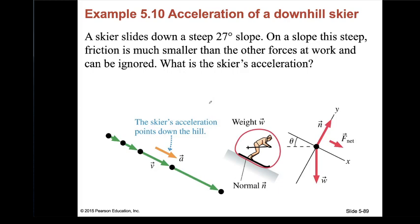A skier slides down a steep 27-degree slope. Friction is negligible. What's the skier's acceleration? Free body diagram: weight W and normal force N (no friction). Weight components in the tilted coordinate system: Wx = W·sin θ (down the slope, the net force direction), and Wy = −W·cos θ balanced by N. So in the y-direction the skier doesn't move; in the x-direction the net force is Wx = W·sin θ.